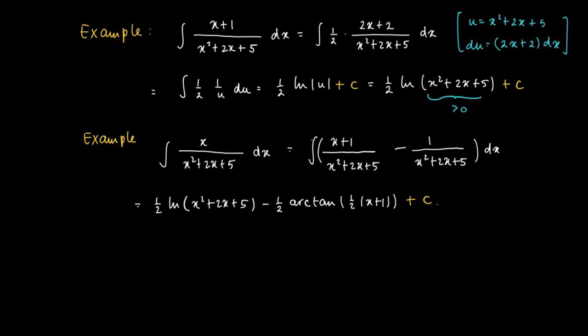And this can always be done. So if we have a linear term divided by an irreducible quadratic term, then most of the times you get a natural logarithm combined with an arctangent.